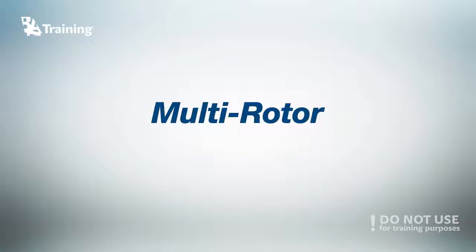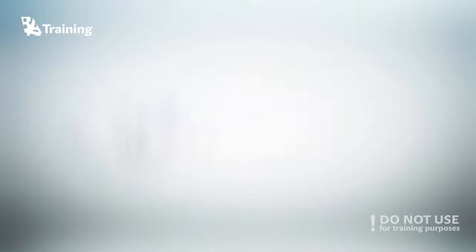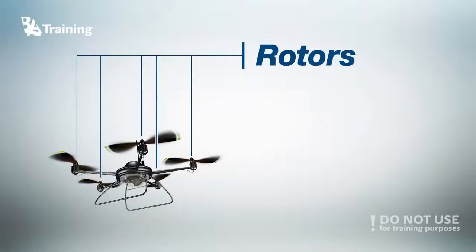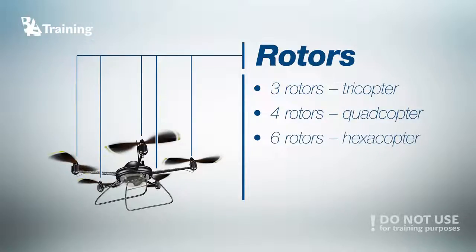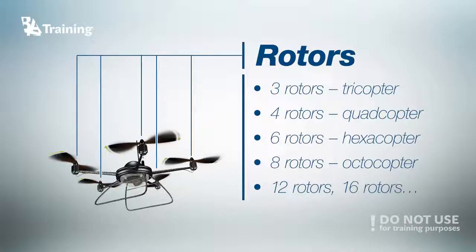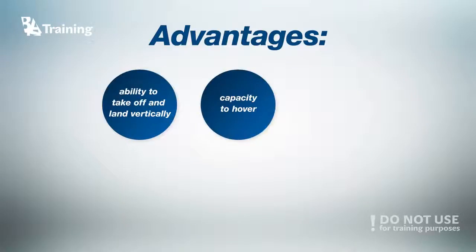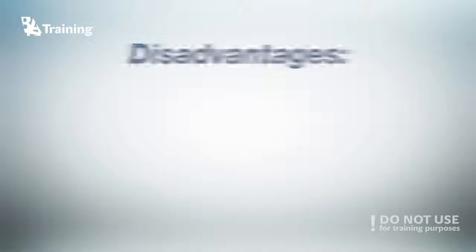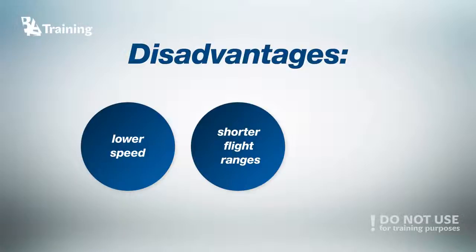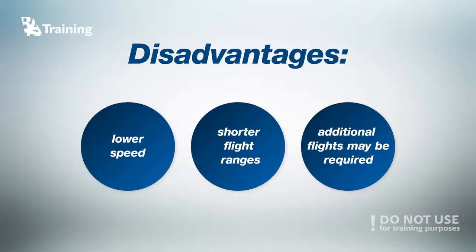The third and most common type is multi-rotor drones. These UAVs consist of several rotor blades that revolve around a fixed mast, and they come in a wide range of setups: three rotors — called a tricopter; four rotors — quadcopter; six rotors — hexacopter; eight rotors — octocopter. There are also more unusual setups like 12 or 16 rotors. Multi-rotors have similar advantages to rotary wings, but they are even more stable and easier to control. One disadvantage is that due to their low speed and short range, the operator may require many additional flights to survey significant areas, which increases time and operational costs.